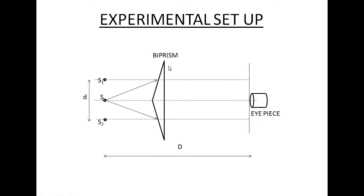In this experiment, we have a bi-prism — a specially made prism having one angle of about 179 degrees and the other two angles of about half a degree. The prism is held in the position as shown in this diagram, and the source of light S is placed in front of it. These are the parallel beams of light emitting out of the bi-prism. Due to superimposition of these two beams of light, an interference pattern is formed, which can be viewed with the help of an eyepiece placed at some suitable distance from the prism.